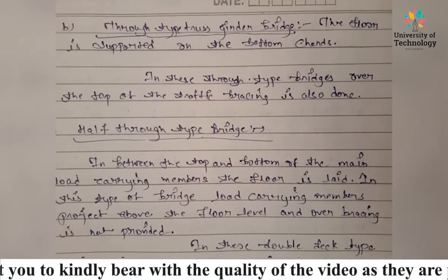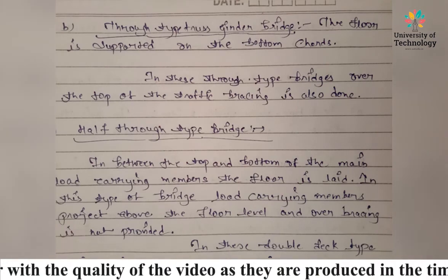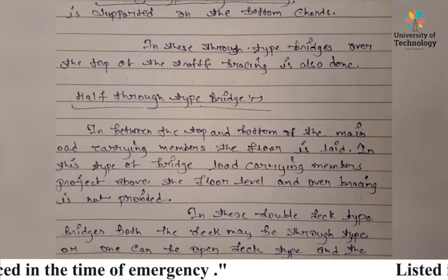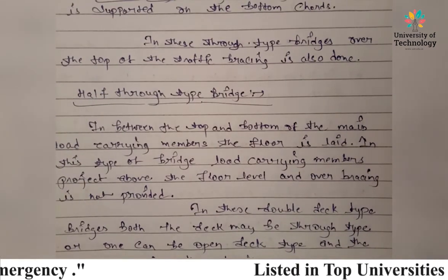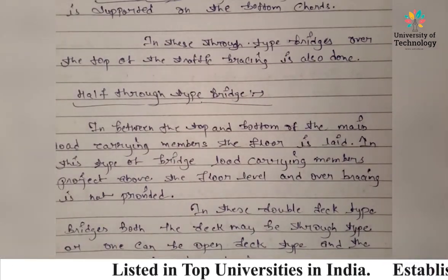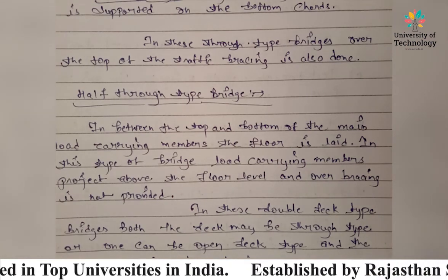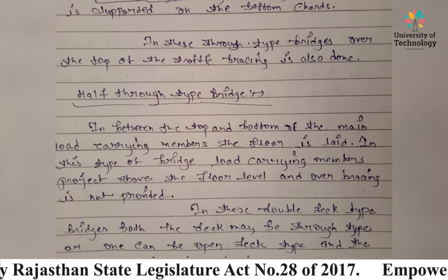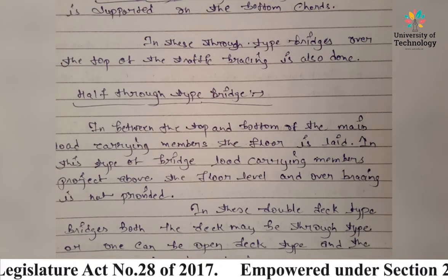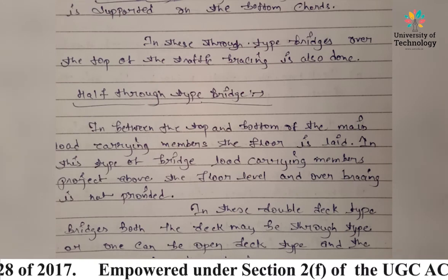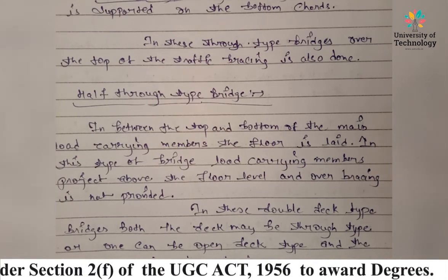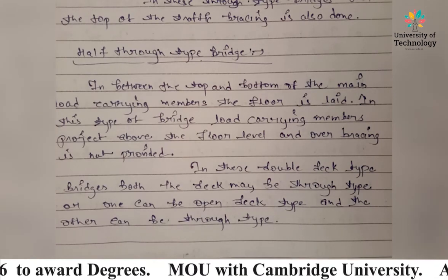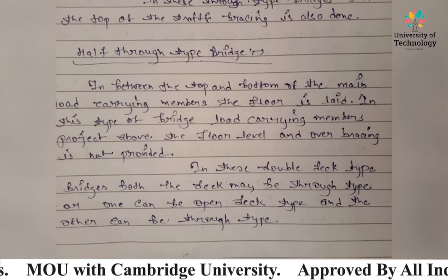The third location-based type is the half-through type bridge. In this type, the floor is laid in between the top and the bottom of the main load-carrying members. The load-carrying members project above the floor level and overhead bracing is not provided.